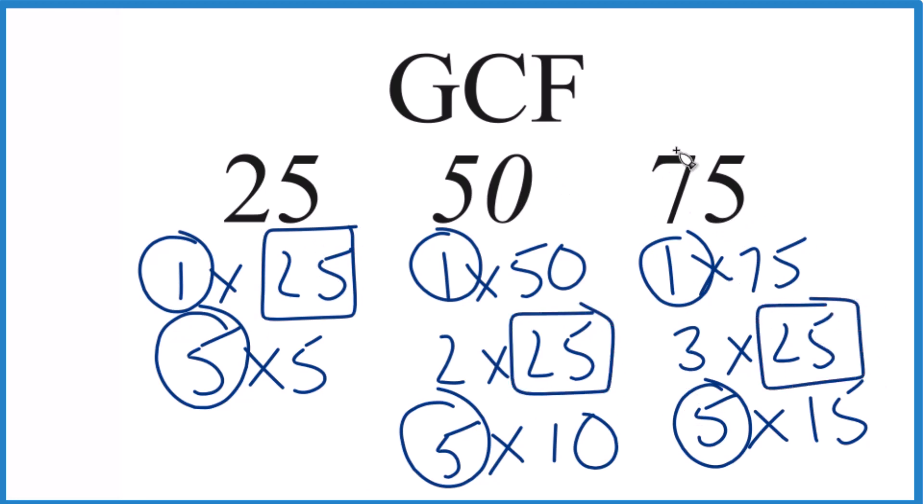So in answer to our question, the GCF for 25, 50, and 75 is 25.